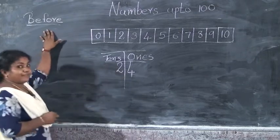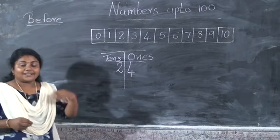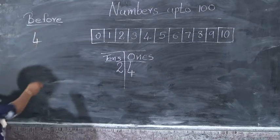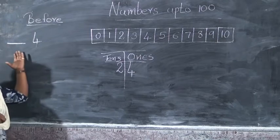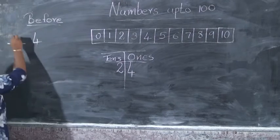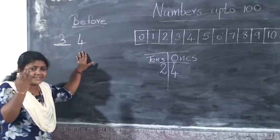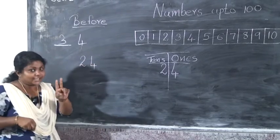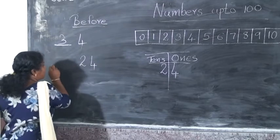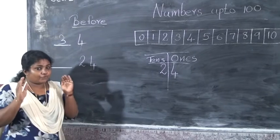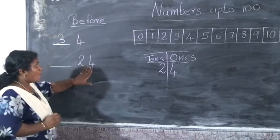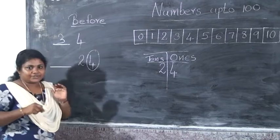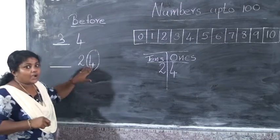Today we are going to study before numbers. In the last chapter, we have studied before and after for one-digit numbers. For example, 4 — which is the before number? That is 3. For the 1-digit number, it is very easy. And today we are going to have a look at 2-digit numbers. For before numbers, you have to look the 1s place first. We have to look the number on the 1s place.